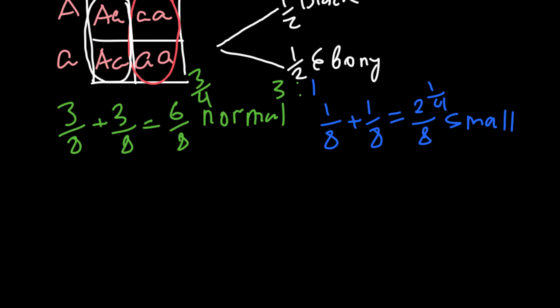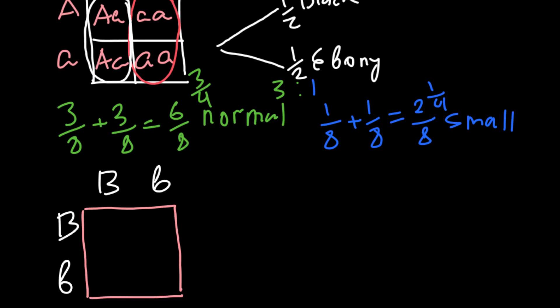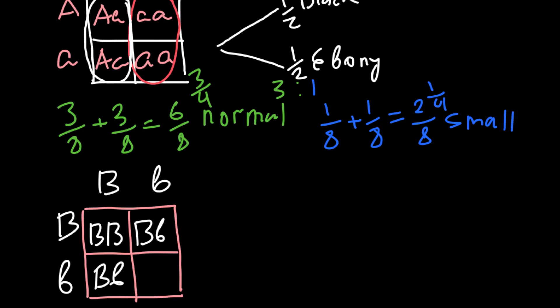We already used letter A for the first trait, so let's use letter B for the second trait. If one parent is heterozygous (Bb) and another parent is also heterozygous (Bb), then in the progeny we can expect the following genotypes: BB, Bb, Bb, and bb — giving us a 3 to 1 phenotype ratio. So 3/4 will have normal wing size and 1/4 will have small wings.